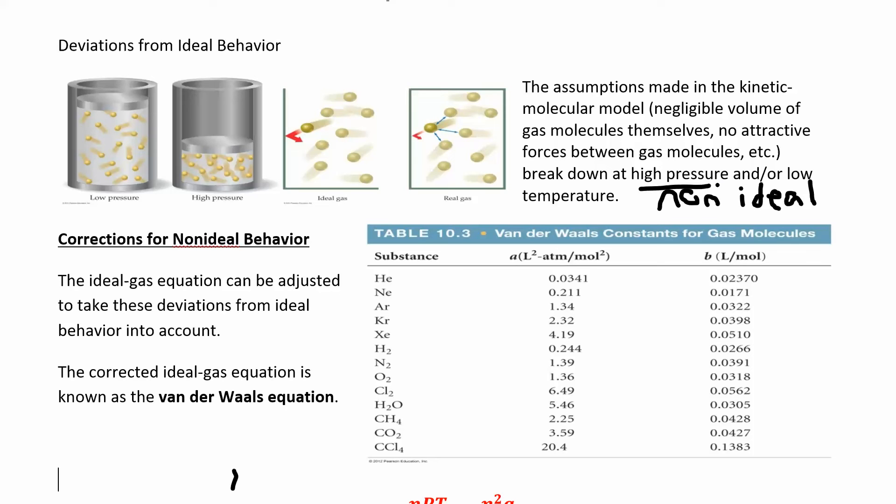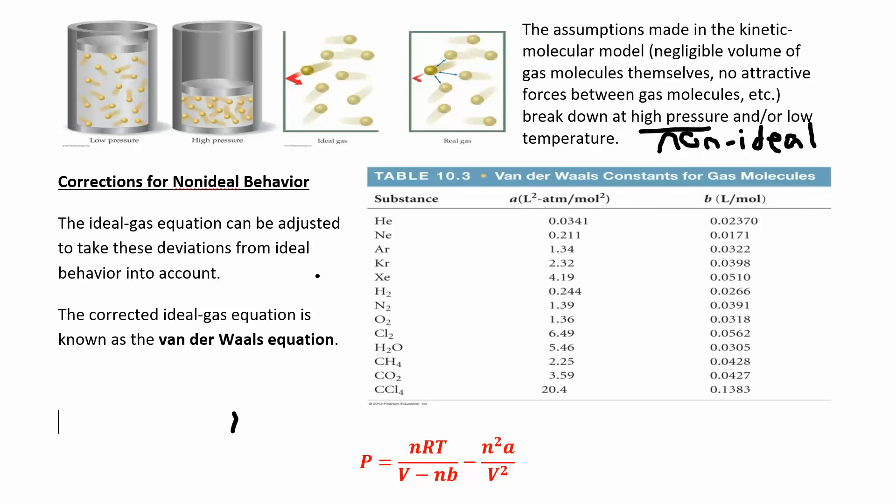Gases will behave non-ideal at high pressure when you're forcing them to be together. Gases want to be apart. And at low temperature, gases don't want to be gases at low temperature. They start to become liquids and solids. This is when gases behave non-ideally, when you start getting away from how they want to be.